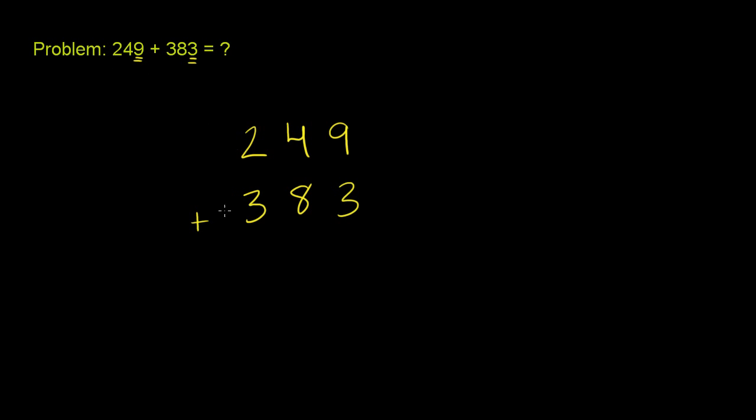If you had a thousands place in one of them and not in the other, it would just be sitting out here by itself. The easiest thing is just to make them line up to the right, or the ones place. Now I'll show you the process, but while we do the process, we'll think a little bit about why it makes sense.